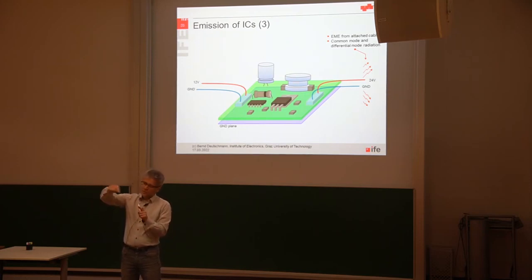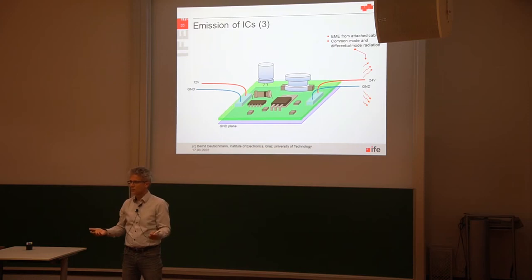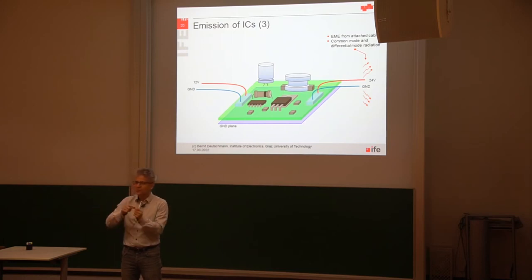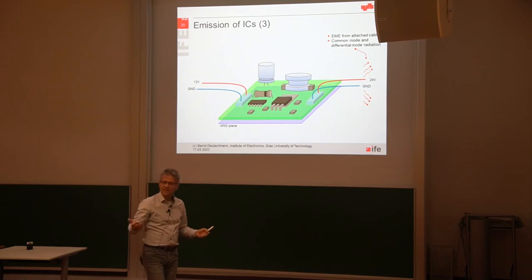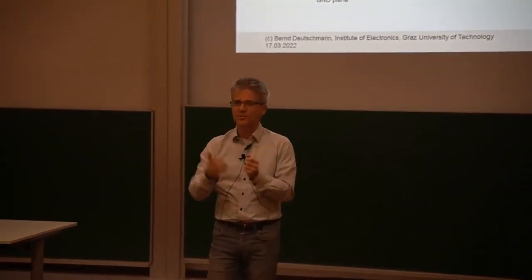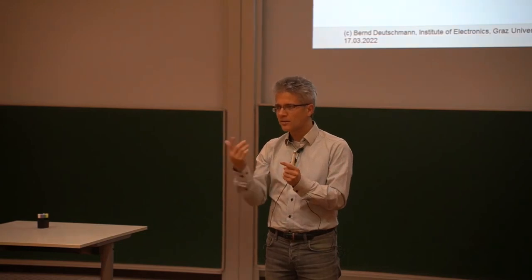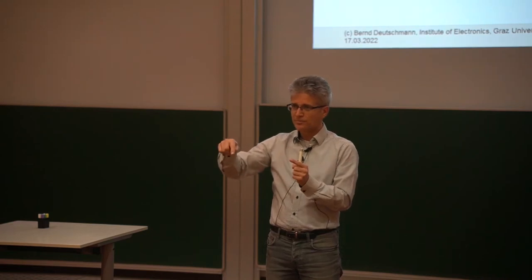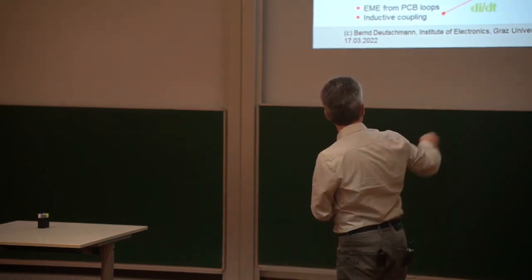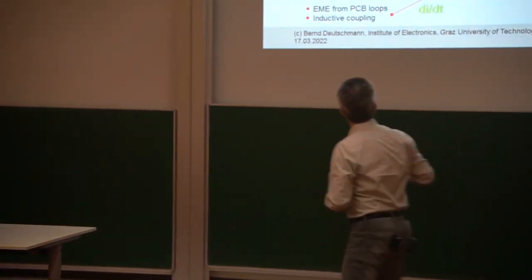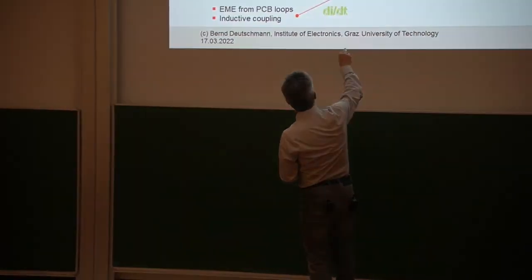For common mode emission, part of the current is also flowing along the ground plane — along the signal return plane. What is the signal return plane made of in a printed circuit board? Copper. And what is the specific resistance of copper? Not zero ohm. So there is also an ohmic resistance along this path where the current is flowing. The resistance is very small — zero-point-something ohm — so there is not that much voltage drop. Current is flowing in the loop and also flowing in the signal return plane.